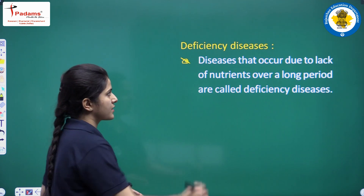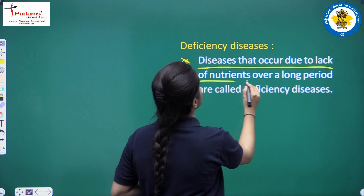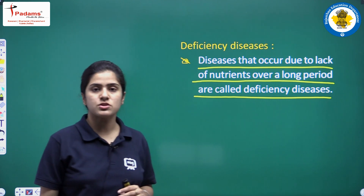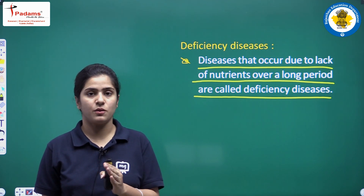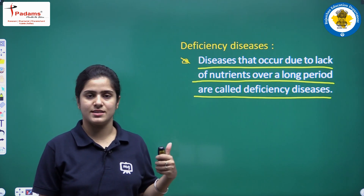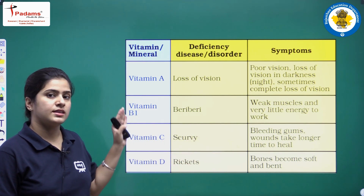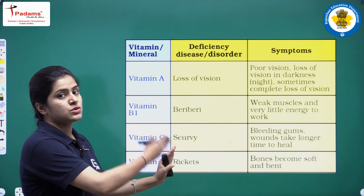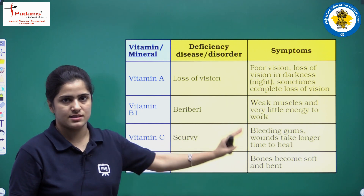The diseases that occur due to the lack of nutrients over a long period of time are called deficiency diseases. Have a regular balanced diet so that you can recover from deficiency diseases. We will now discuss a table listing the nutrients, the diseases caused by their deficiency, and the symptoms of those diseases.